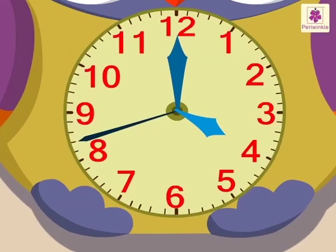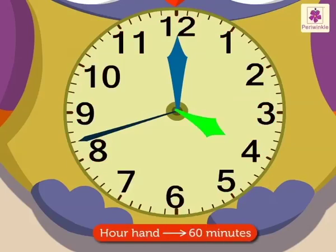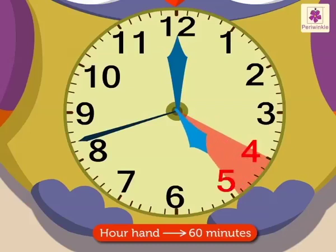You will see 12 numbers on the face of a clock. Each number tells us the time in hours. An hour hand moves from one number to another in 60 minutes.